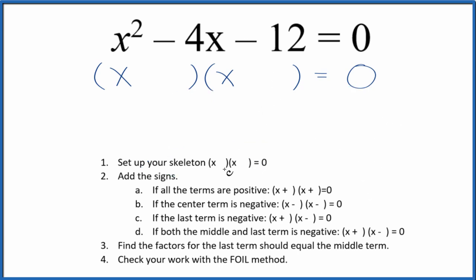Once we have that, we can add the signs into the skeleton equation. I see I have a negative and a negative here in this equation. So negative middle term and last term negative. We're going to put a positive and a negative in our skeleton equation.